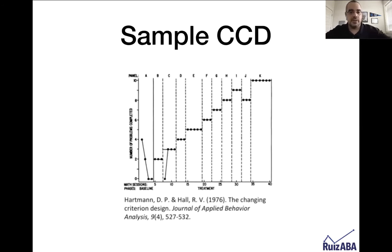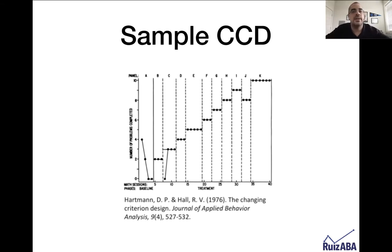This comes from Hartman Hall, 1976, so you can check that out. If you look, they're targeting the number of problems completed, and they have phases A through K. In phase A, the baseline phase, they ran it just to see how many problems would be completed correctly. One day they got four, the next time they got two, and then the third and fourth sessions they got zero. When you average those, you get about two correct. So that's their first criterion, and that's in panel B.